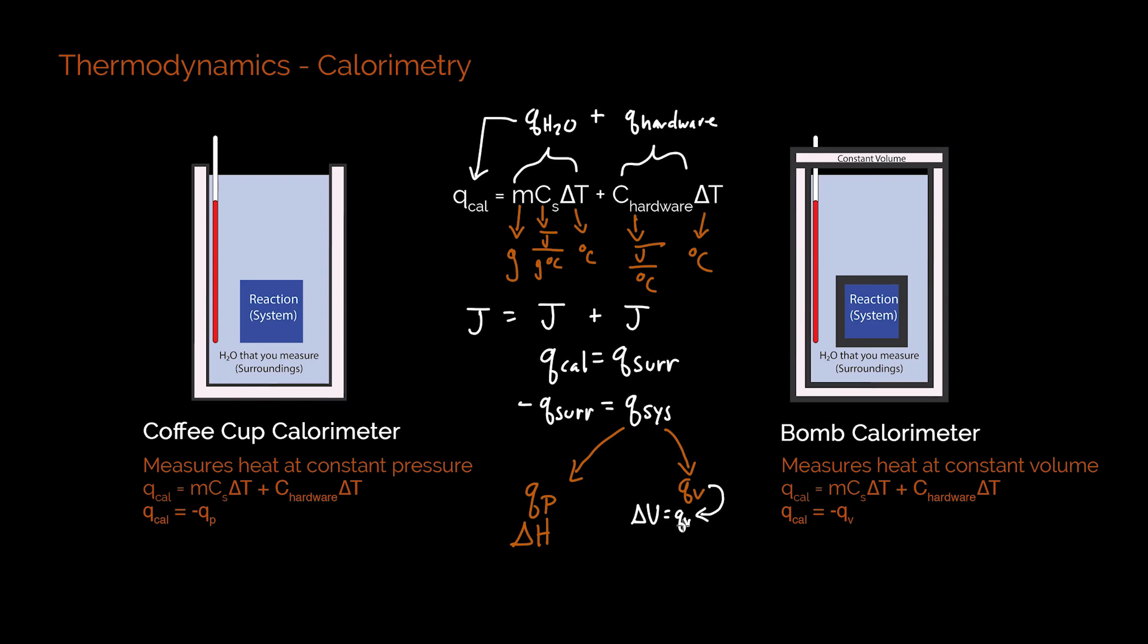And for the coffee cup calorimeter, the idea is the exact same. Now you're measuring heat at a constant pressure here. And this is largely due to the actual reaction that you're running. You're not typically running a reaction with a change in gas moles. In this case, you're usually running a dissolution reaction that isn't changing volume anyway. So it's very easy to use this experimental setup to run a particular reaction at constant pressure.